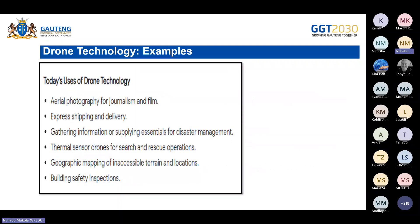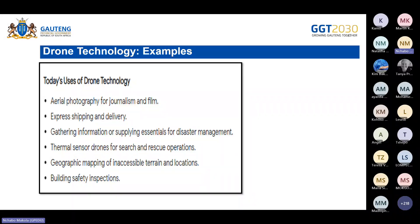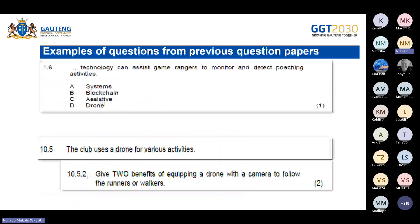Examples of where drone technology can be useful include aerial photography for journalism and film, express shipping and delivery, gathering information or supplying essentials for disaster management, thermal sensor drones for search and rescue operations, and building safety inspections.